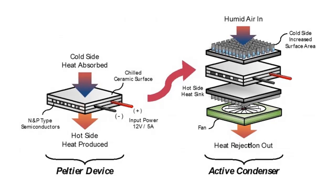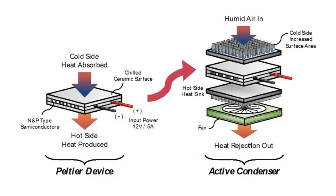The Peltier device operates by creating a temperature gradient through the flow of an electric current in two different conductive materials. This temperature difference enables the cooling of one side, which we designated as the condensing surface. By optimizing the heat transfer and airflow around the device, we were able to maximize condensation efficiency.